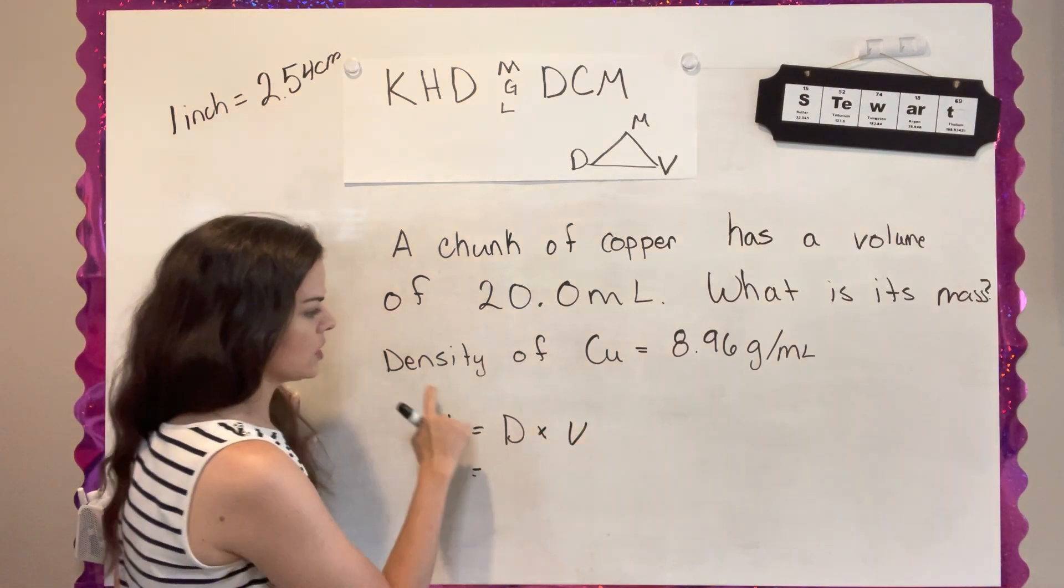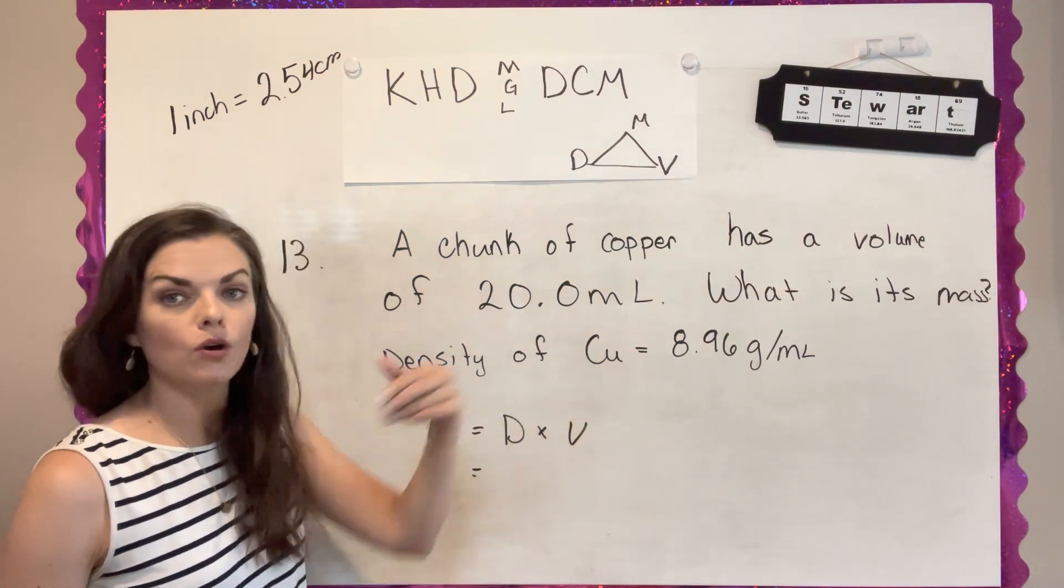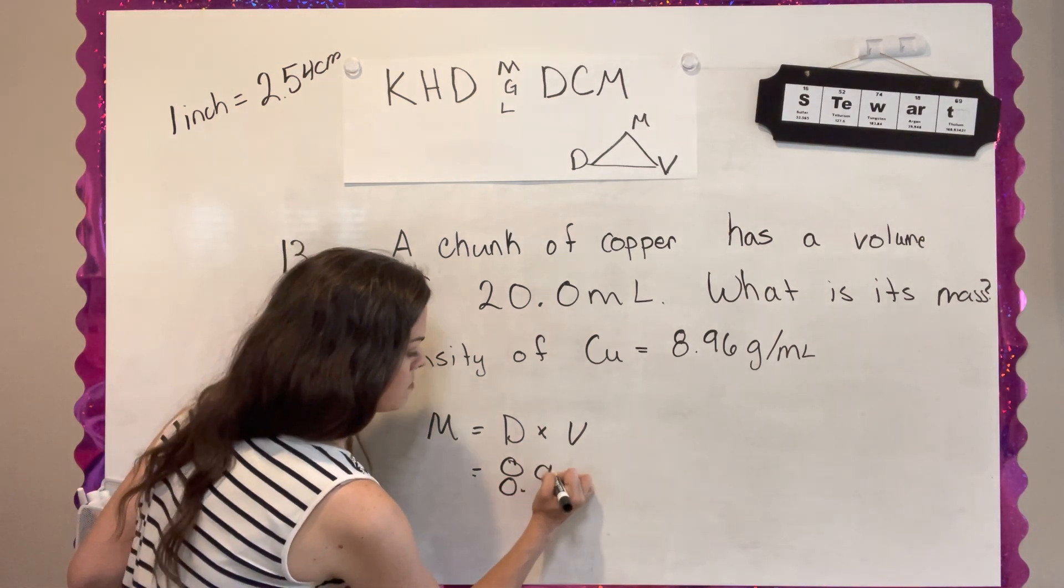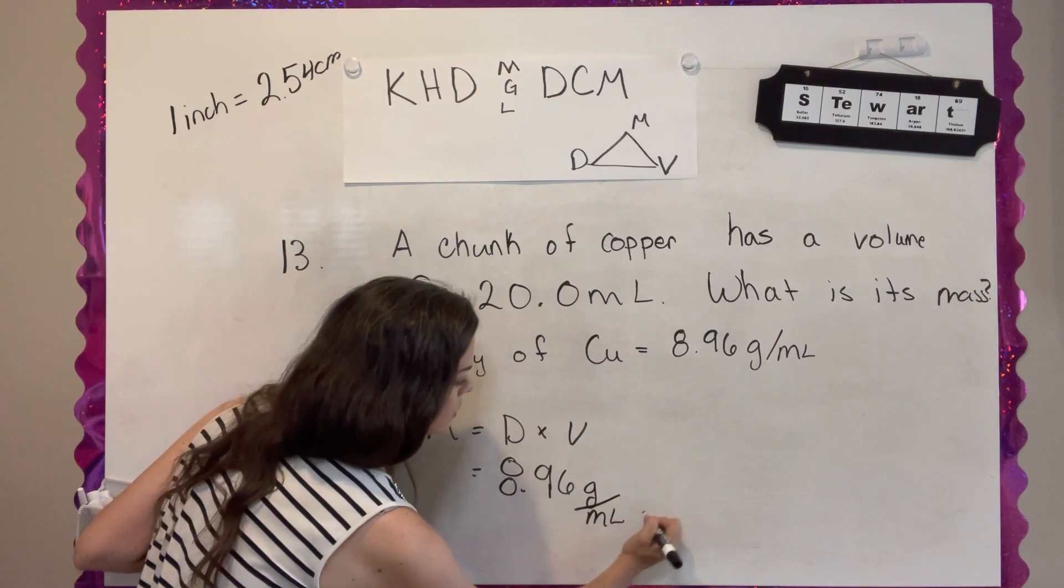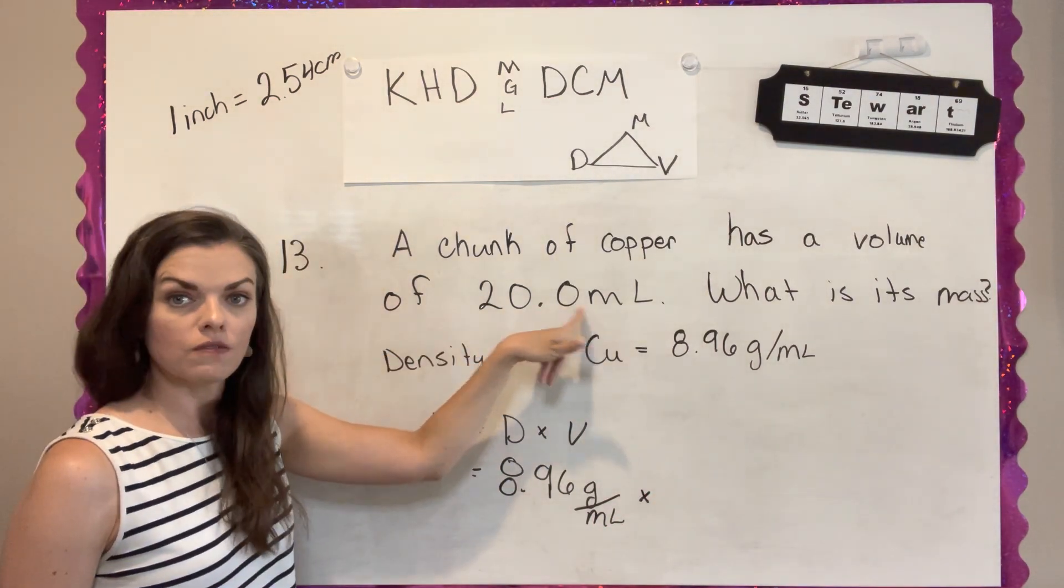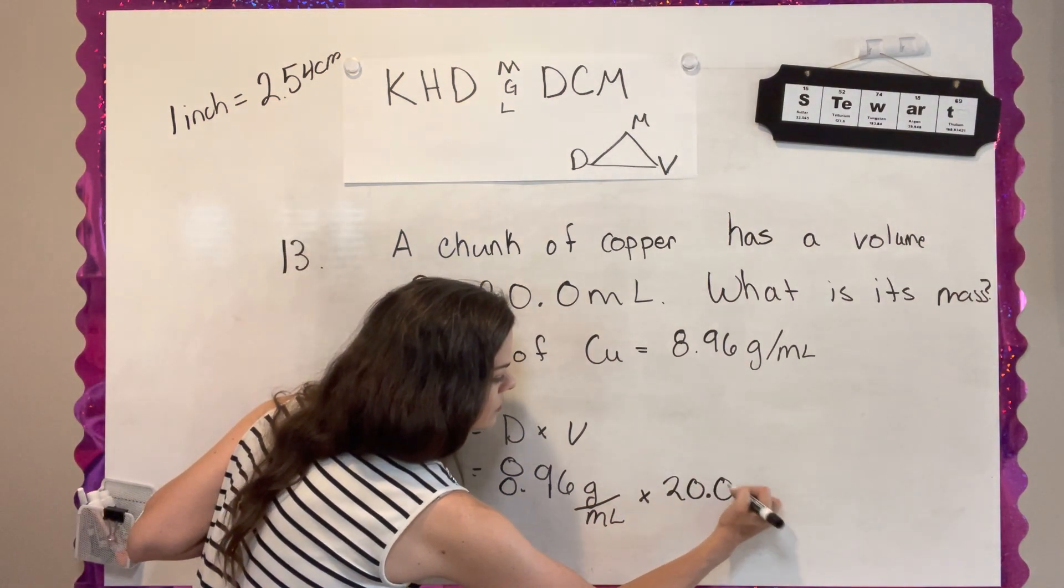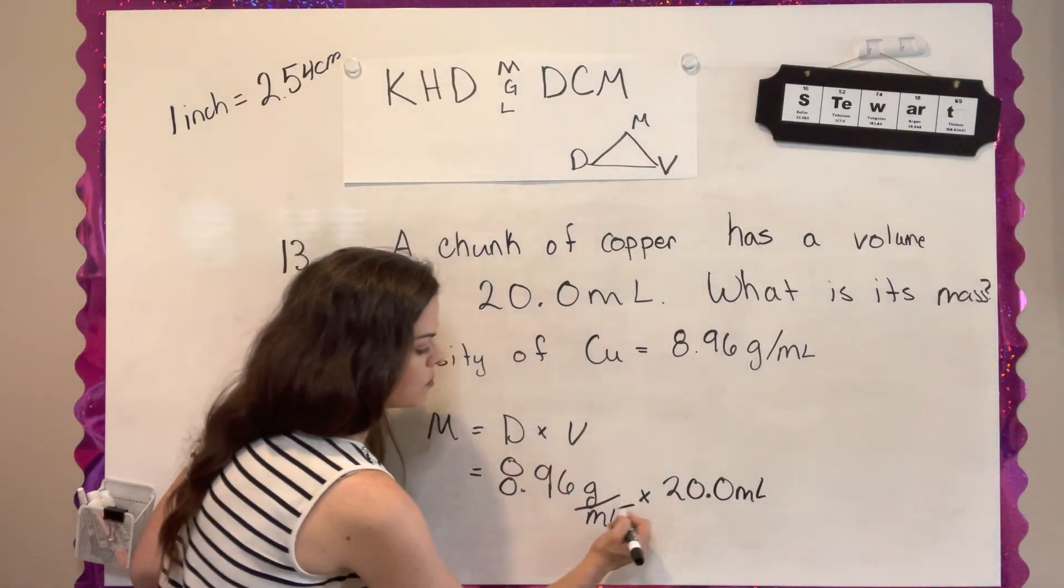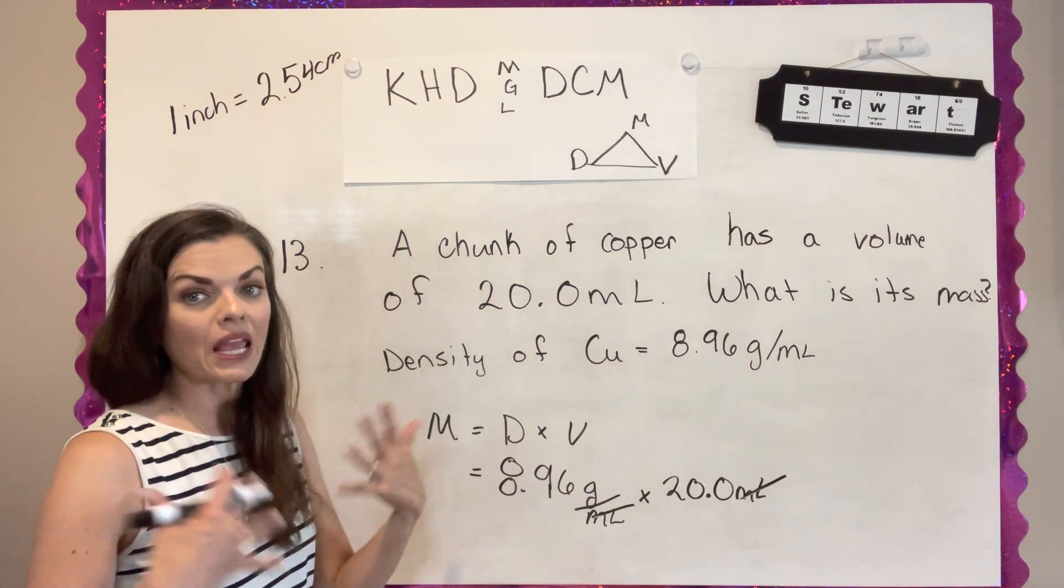So in question 13, they're asking you for the mass. And so mass is equal to the density times the volume. And they actually give you the density of copper. If you haven't learned yet, copper is not CO, it's Cu. It's after its Latin name. Density is in grams per milliliter. And I'm multiplying it by the volume, which they give in this formula already in milliliters. And so if I do this right, milliliters will cancel out and I will be left with an answer in grams. And that is the mass.